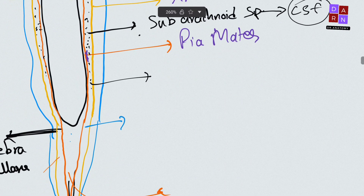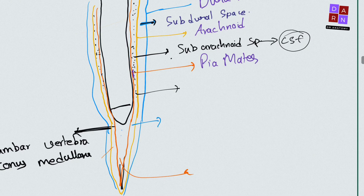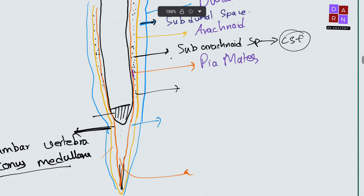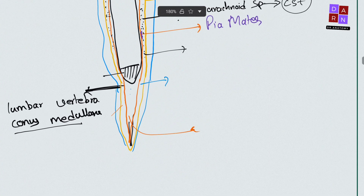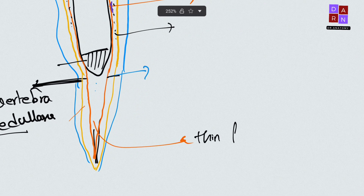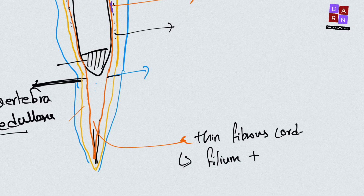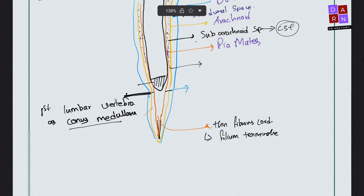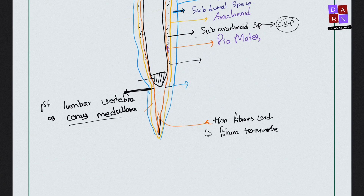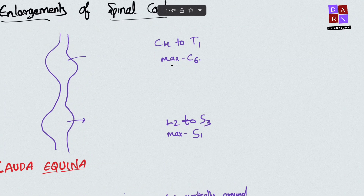As mentioned, the spinal cord ends at L1 vertebra as the conus medullaris. After the spinal cord finishes at L1, the pia mater continues to the coccygeal region as a thin fibrous cord known as the filum terminale.